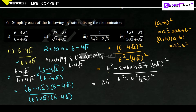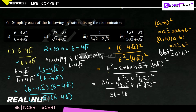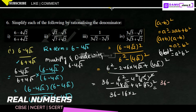Expanding the numerator: 6 squared minus 2 times 6 times 4 root 2 plus (4 root 2) whole square, all divided by 6 squared minus (4 root 2) whole square. That gives us 36 minus 48 root 2 plus 16 times 2 in the numerator. Since (4 root 2) squared equals 4 squared times (root 2) squared, the square and square root cancel, giving 16 times 2. The denominator becomes 36 minus 32.